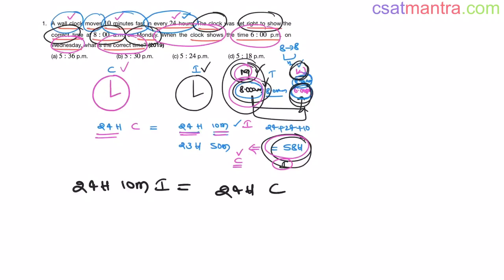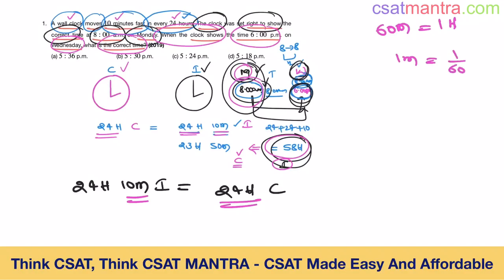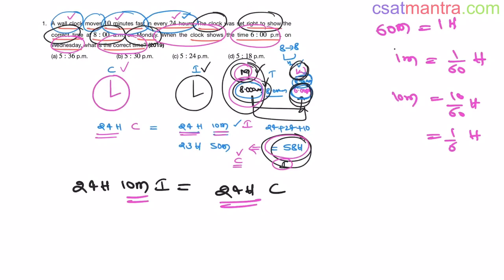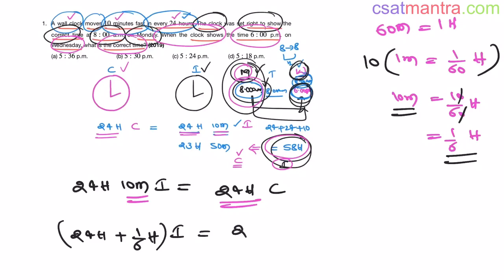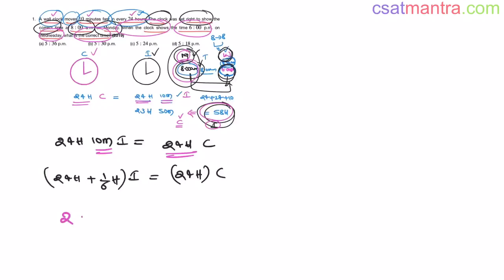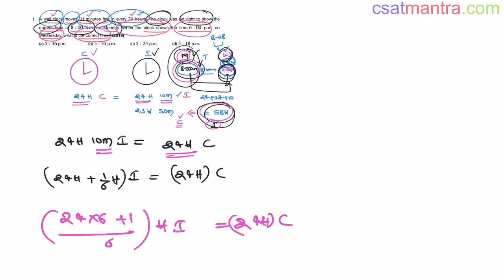24 hours 10 minutes in the incorrect clock is equal to 24 hours in the correct clock. I want to convert these minutes into hours. We know 60 minutes equals 1 hour, so 1 minute equals 1/60 hours, and 10 minutes equals 10/60 hours, which is 1/6 of an hour. So 24 hours plus 1/6 hour in the incorrect clock equals 24 hours in the correct clock. That gives us (144 + 1)/6 = 145/6 hours in the incorrect clock equal to 24 hours in the correct clock.